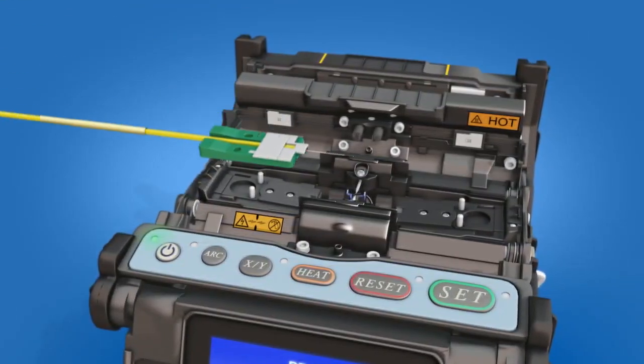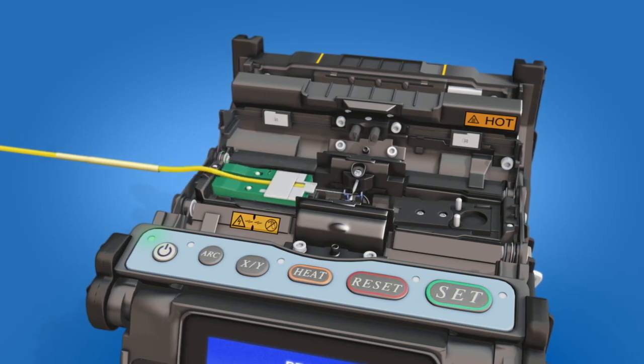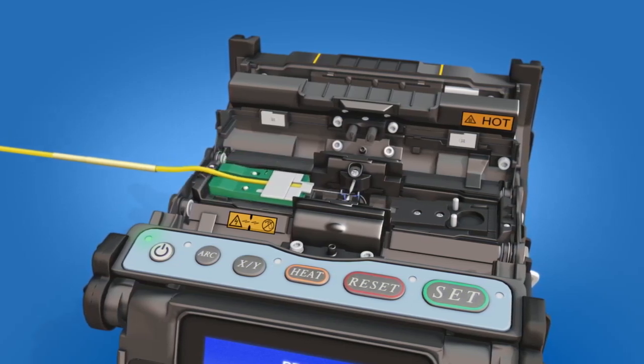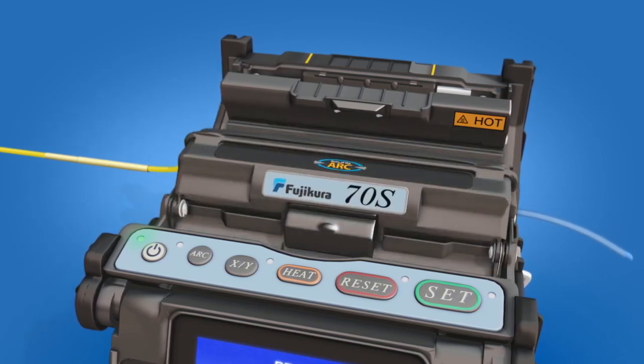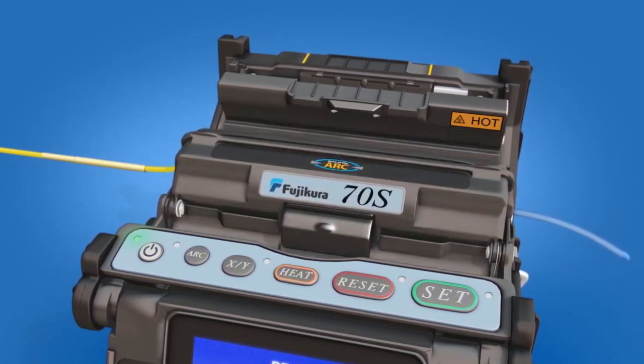Load the fiber holder into the left side of the fusion splicer. Load the ferrule unit into the right side of the fusion splicer and close the wind protector. Splice the fiber to the fuse connect connector.